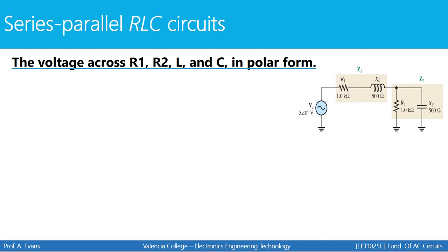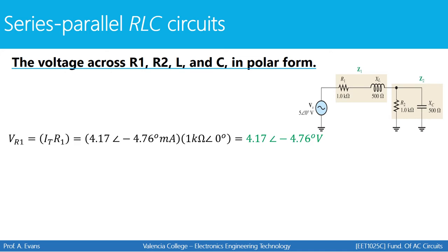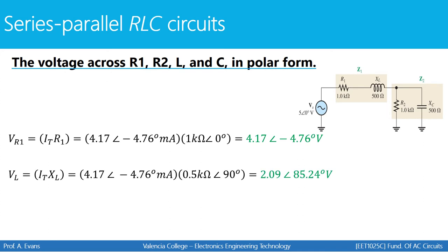Next, we find the voltage across R1, R2, the capacitor, and the inductor in polar form. For R1, we know the total current flows through it since R1 is in series with the source, so we use Ohm's law. For the inductor, we write its impedance as 0.5 kilohms at an angle of 90 degrees and apply Ohm's law. The voltages for R1 and the inductor are straightforward because we know the current through them.